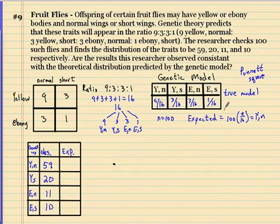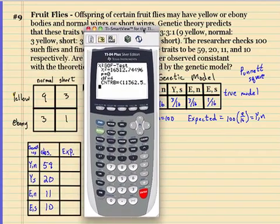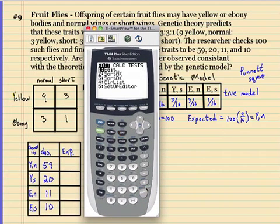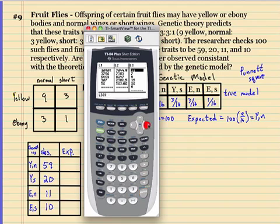I already threw these in my calculator. I put all these in my calculator already under a list. So all I have to do is multiply every single one of these by 100, and it will give me my expected list. So let me drag this over. Stat.